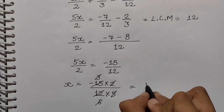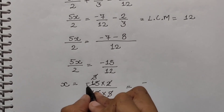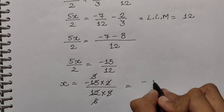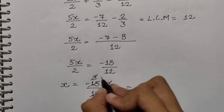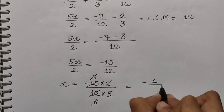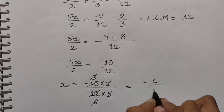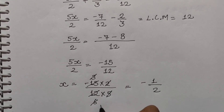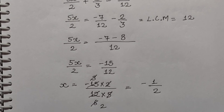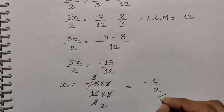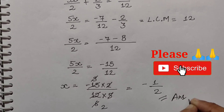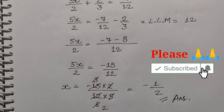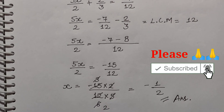Humara answer kya aayega — minus, upar 1, niche 2. So x equals minus 1 upon 2. This was the answer of this question. Thank you and have a nice day.